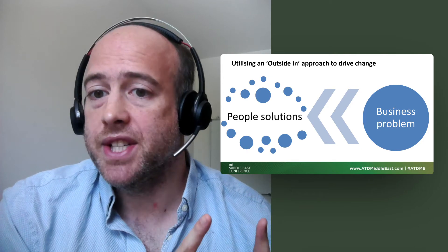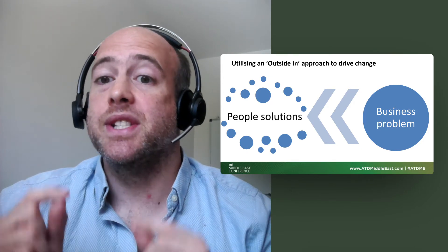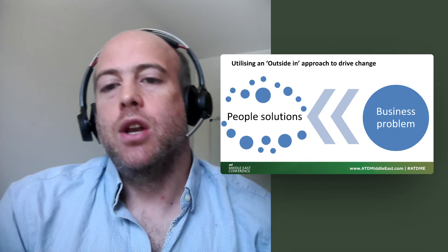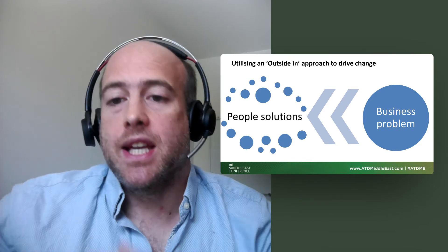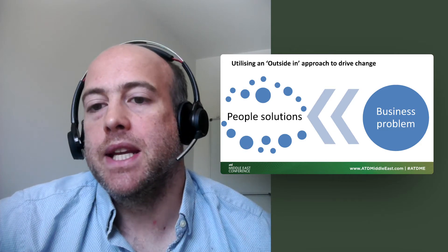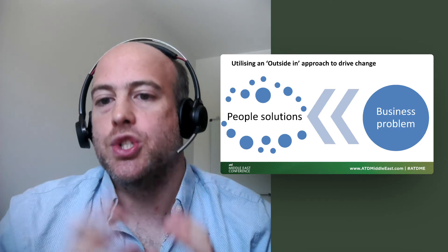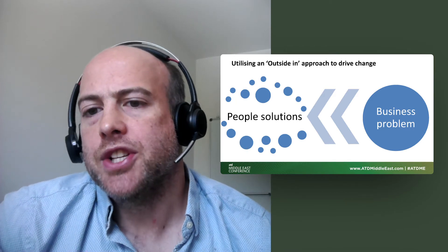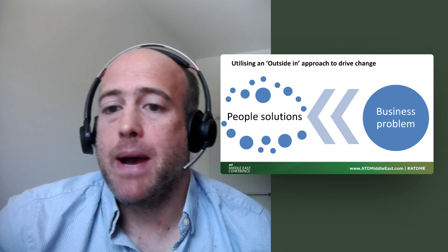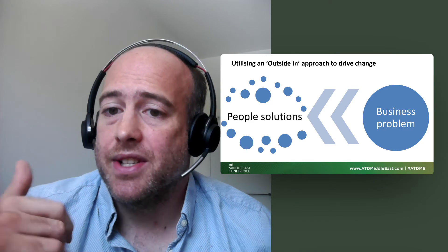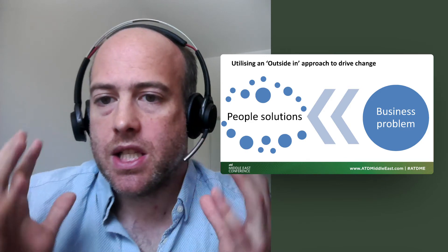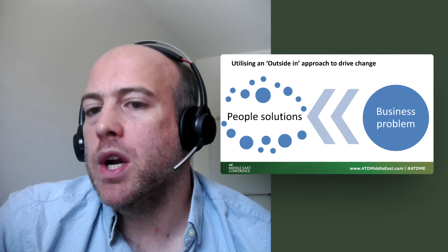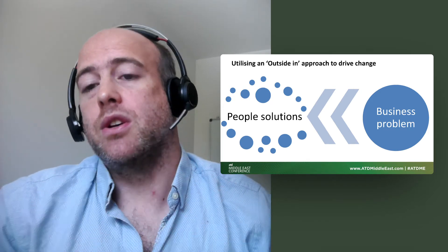We'll look at how we can use data analytics to identify the problem — what are the key risks and key opportunities — then working backwards: understanding who, and what, and how things are going to change, and then looking at what are the different processes and tools that, given the context of the company and the technology coming in, are the right tools to drive those business outcomes. In short, the talk is going to be about outside-in versus inside-out.